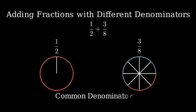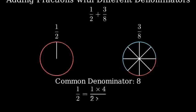To add fractions with different denominators, we need to first convert them to equivalent fractions with the same denominator. The common denominator will be 8. Since 8 is already the denominator of our second fraction, let's convert 1 half to an equivalent fraction with denominator 8.